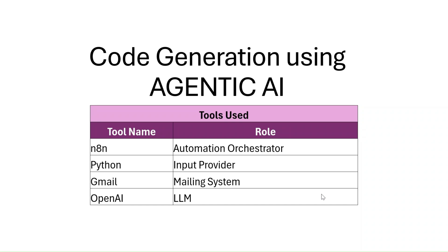Today I'm going to show you an agentic AI-based code generator. The tools we'll be using are: n8n, which is an automation orchestrator; a small Python program to provide the input so the n8n agentic AI flow can start; Gmail as a mailing system; and OpenAI ChatGPT as the LLM model.